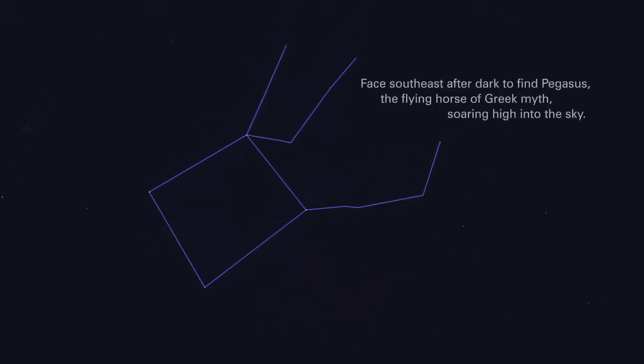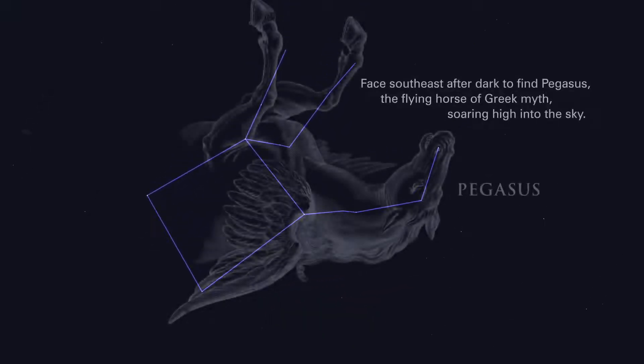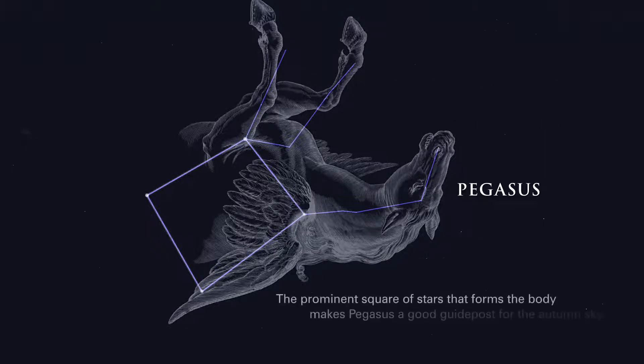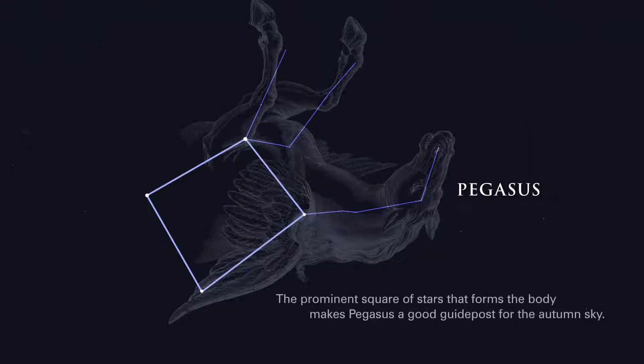Face southeast after dark to find Pegasus, the flying horse of Greek myth, soaring high into the sky. The prominent square of stars that forms the body makes Pegasus a good guidepost for the autumn sky.